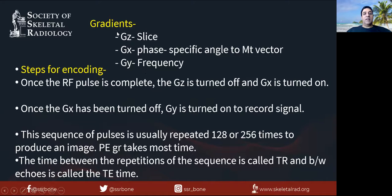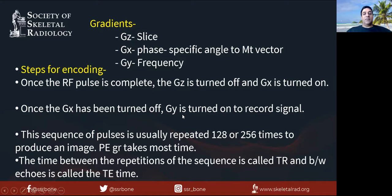When the signals come back, they have to be encoded — where are they coming from in space? By slice, phase, and frequency encoding. Once the RF pulse is complete, the slice-selecting gradient is turned off, the phase encoding gradient is applied to provide a different phase shift to the proton being encoded, and then the readout gradient is turned on to record the signal. This is repeated multiple times until the image is created — for a matrix of 256, you repeat 256 times.